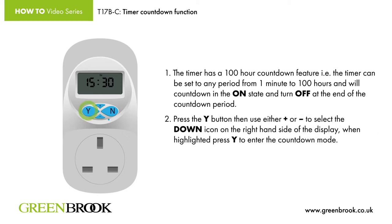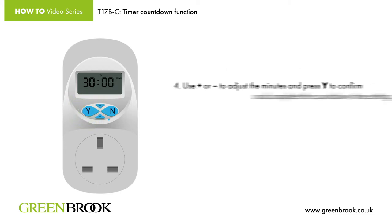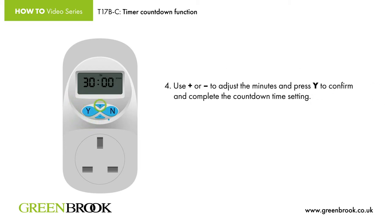Step 2: Press the Y button, then use either plus or minus to select the down icon on the right-hand side of the display. When highlighted, press Y to enter the countdown mode. Step 3: Use plus or minus to adjust the hours and press Y to confirm. Minutes will flash. Step 4: Use plus or minus to adjust the minutes and press Y to confirm and complete the countdown time setting.